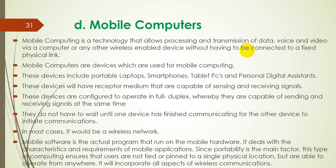Full duplex means they are capable of sending and receiving signals at the same time. They do not have to wait until one device has finished communicating for the other device to initiate communication. In most cases, it would be a wireless network.